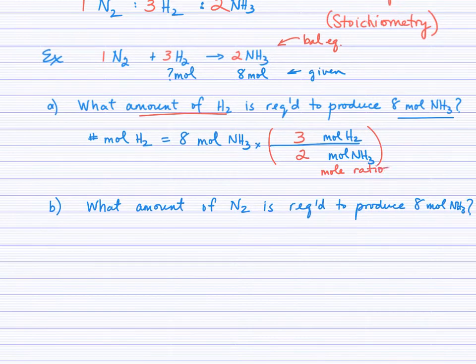That's the key - the coefficients in the balanced equation relate moles of one substance to moles of another. We cancel the units of NH₃, leaving moles of H₂, which is what we're finding. 8 times 3 divided by 2 equals 12 moles of H₂.